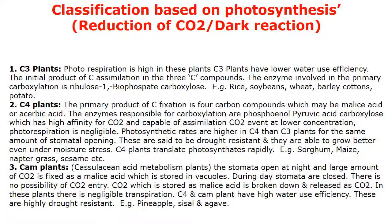In C4 plants, the primary product of carbon fixation is a 4-carbon compound, which may be malic acid. The enzyme responsible for carboxylation is phosphoenolpyruvate (PEP) carboxylase, which has high affinity for CO₂ and can assimilate CO₂ even at lower concentrations. Photorespiration is negligible, and photosynthetic rates are higher in C4 than in C3 plants with the same stomatal opening. C4 plants are drought-resistant and grow better under moisture stress. Examples are Sorghum, Maize, Napier Grass, and Sesame.